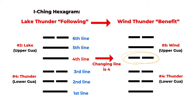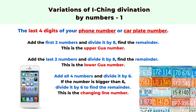Now you know how to use numbers to calculate a Yi Jing hexagram and find the changing line. We can look at different variations. You can use the last four digits of your phone number or the last four digits of a car plate number. With this method, add up the first two digits — if bigger than eight, divide by eight and use the remainder. Then add up the last two digits and do the same. For the changing line, add all four digits together and divide by six, using the remainder as the changing line number.